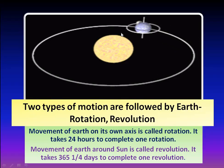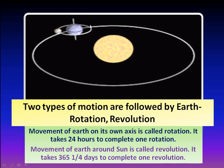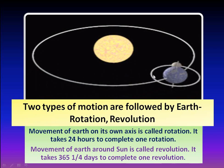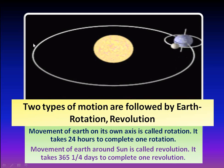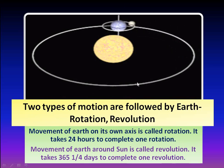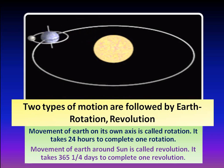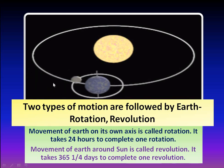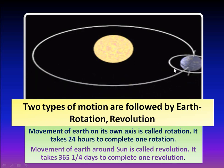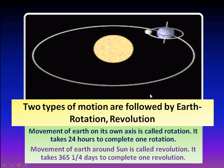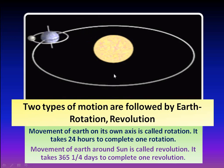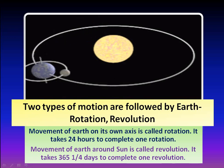You must have studied in SST that the Earth follows two types of motion. One is rotation — movement on its own axis — which takes 24 hours to complete. The second is revolution — movement around the sun — which takes 365 and one-quarter days to complete one revolution.